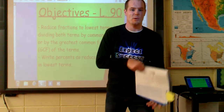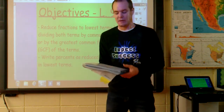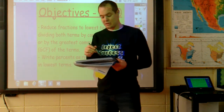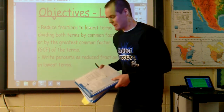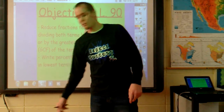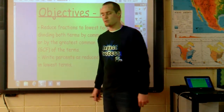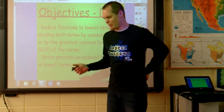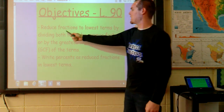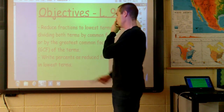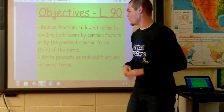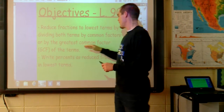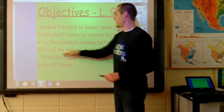Hello, girls and boys of the fifth grade. Today we're going to talk about lesson 90, found on page 586 in your books. The title is Reducing Fractions, Part 2. Obviously there was a Part 1, so this is just building on that last lesson we learned about a week ago. The first objective we're going to learn about today is to reduce fractions to lowest terms by dividing both terms by common factors or by the greatest common factor, the GCF of the terms.